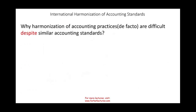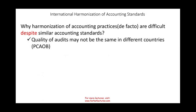Why is de facto harmonization difficult? Why is it difficult to have similar practices? There are many reasons. There are legal reasons and basis for accounting. The quality of audit may not be the same in different countries — for example, in the US we have the PCAOB, the Public Company Accounting Oversight Board, created because of a series of accounting frauds which led to securities fraud, giving the government more oversight over auditors. That may not be the case in different countries, so auditing requirements will differ.